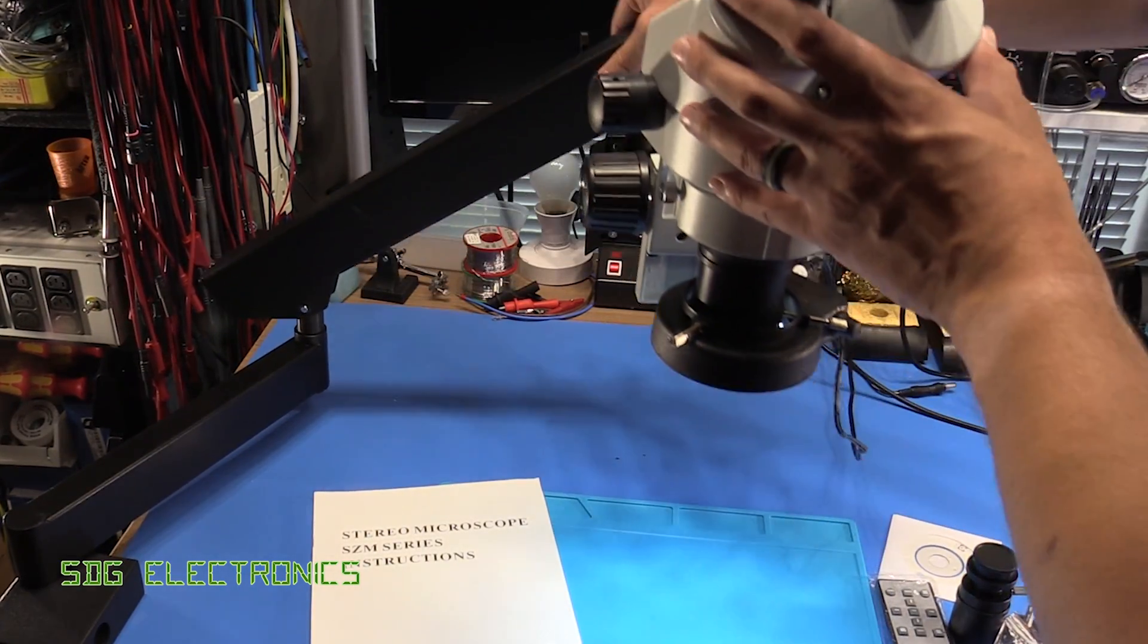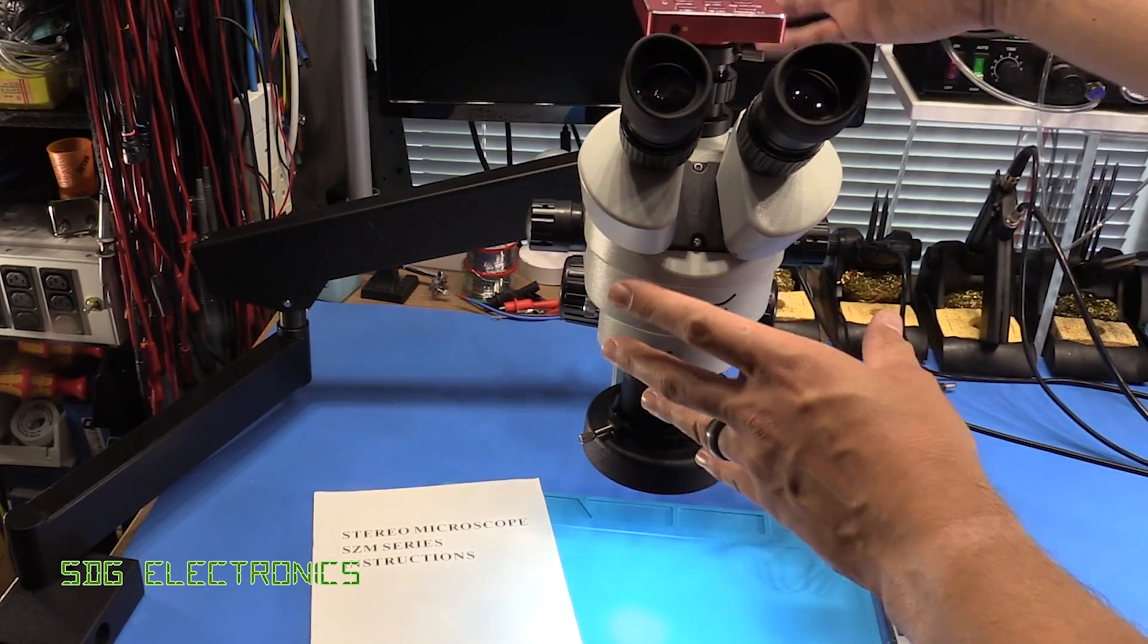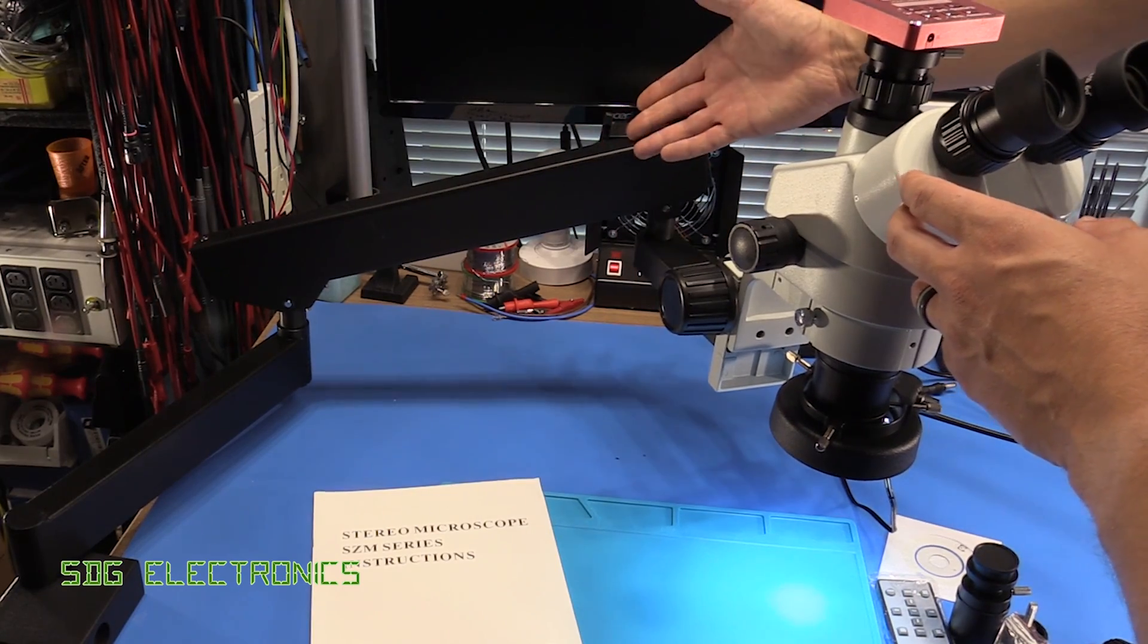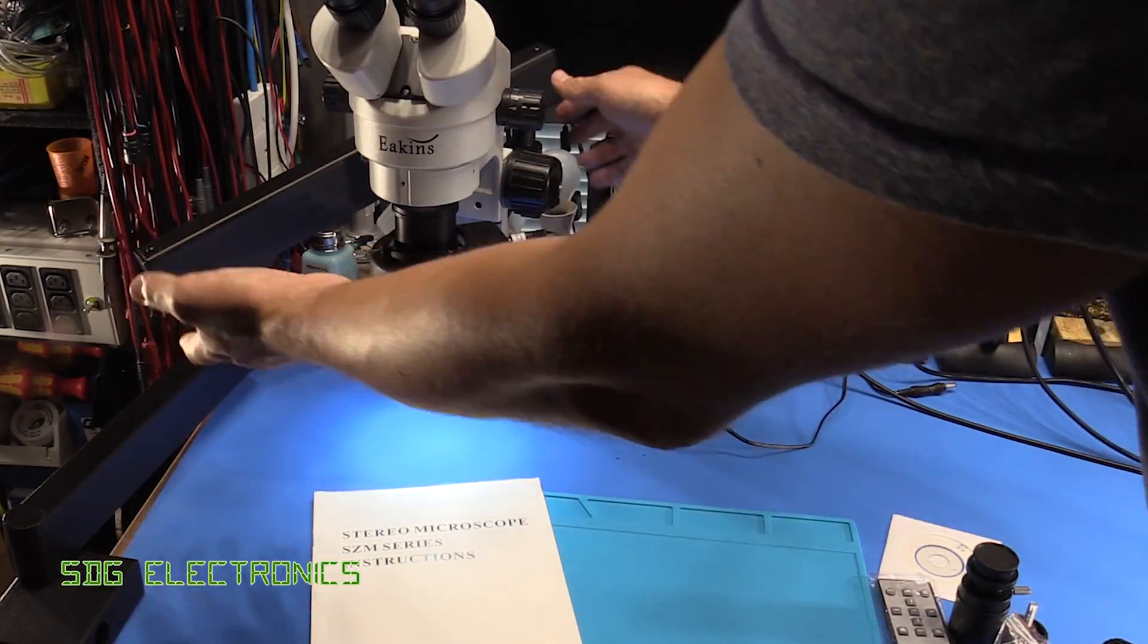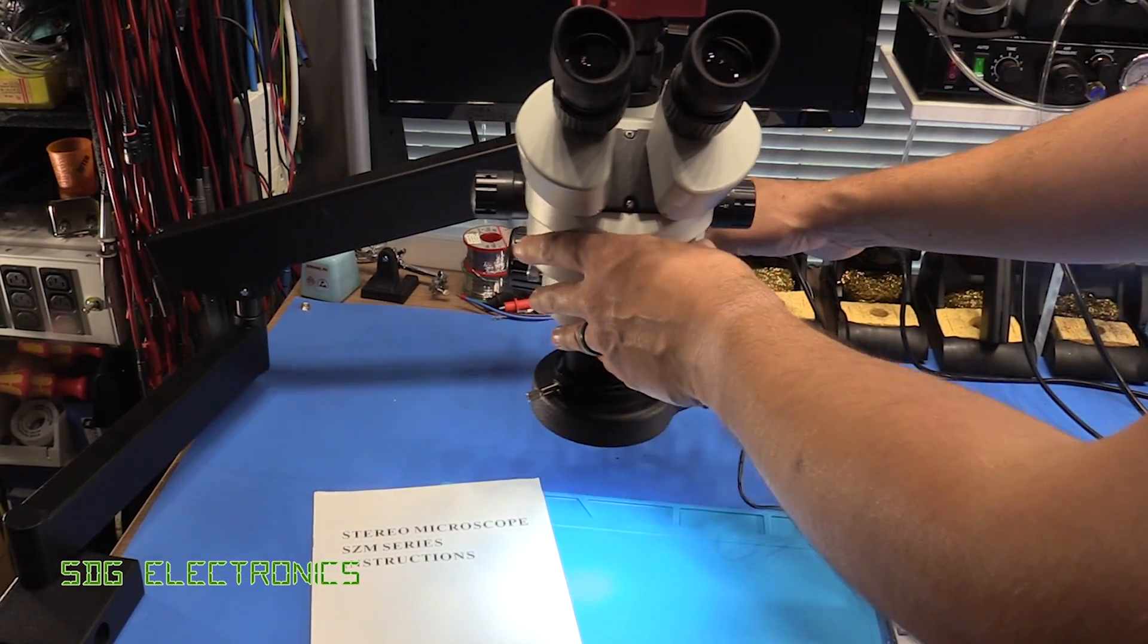There's a little knob on here to adjust the tension, but you can change the height of the microscope head coarsely and then of course you've always got the fine adjustment knob for when you actually do the focusing. So this is really quite a nice setup and obviously when it's stowed away you can position it in such a way that it's not taking up all of your bench space.